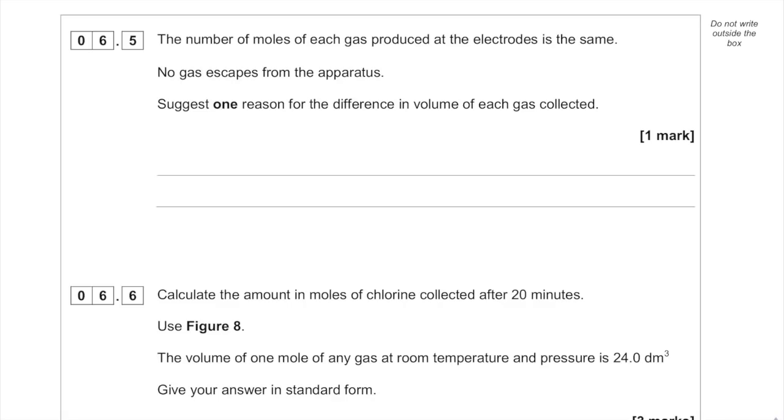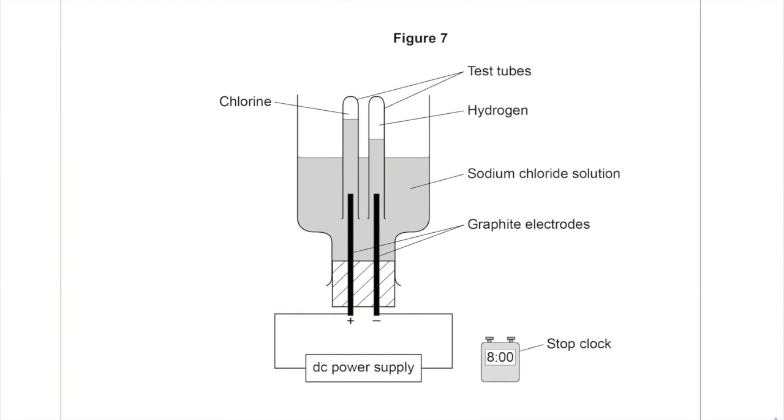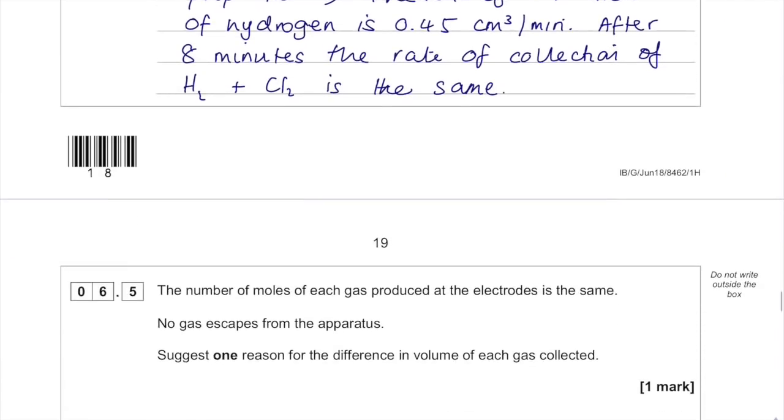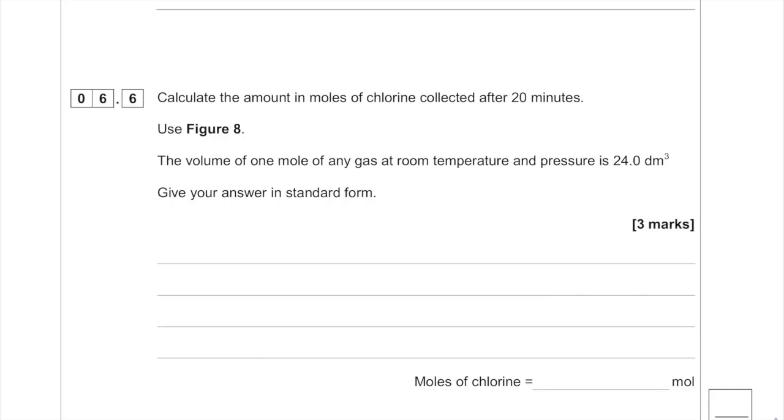For hydrogen, we do change in y which is 9 over change in x which is 20. So 9 divided by 20 equals 0.45 cm³ per minute. Looking at the graph, you can see the gradients are identical for hydrogen and chlorine for most parts. After 8 minutes, the rate of collection of hydrogen and chlorine is the same. The number of moles of each gas produced is the same. Suggest one reason for the difference in volume. It's because chlorine is soluble in water, so some of it dissolves, and therefore its reading will be less.